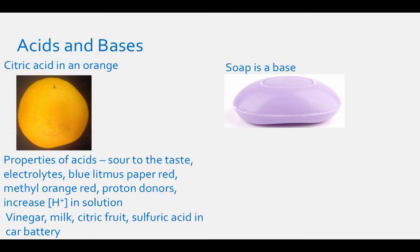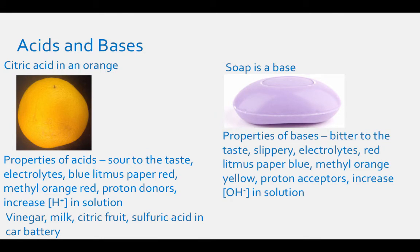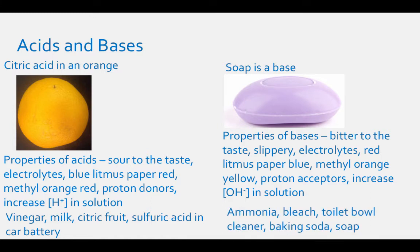Other acids you have around your home are vinegar, milk, citrus fruits, and sulfuric acid in your car battery. The properties of bases are that they are bitter to the taste, they are slippery, they are electrolytes, they turn red litmus paper blue, and methyl orange yellow. They are proton acceptors, and they increase the OH- concentration in an aqueous solution. Other bases you have around your home are ammonia, bleach, toilet bowl cleaner, baking soda, and soap.